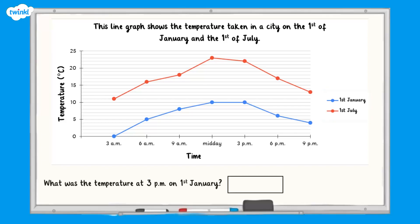If we want to find out the temperature on the 1st of January at 3pm, we need to find that time on the horizontal axis, and then draw a vertical line from that point to the line representing January. In this case, the blue line. Then we need to draw a horizontal line from here to the y-axis.